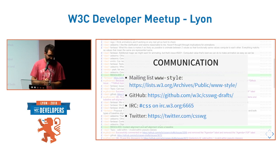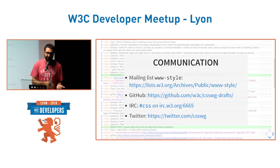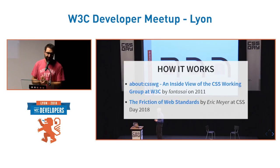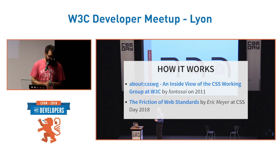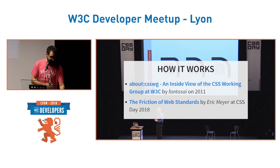Regarding communication channels: the group has a mailing list mostly used for announcements and meeting minutes; a GitHub repository which is the central place for discussions nowadays; IRC, which is still important for W3C — all meetings happen there and you can follow them live; and a Twitter account where you can sometimes provide feedback. If you want to know more about how it works, Eric Meyer has a very nice blog post explaining everything inside the group, and there is also a talk about how adding a simple property like border-radius has so many corner cases and discussions.